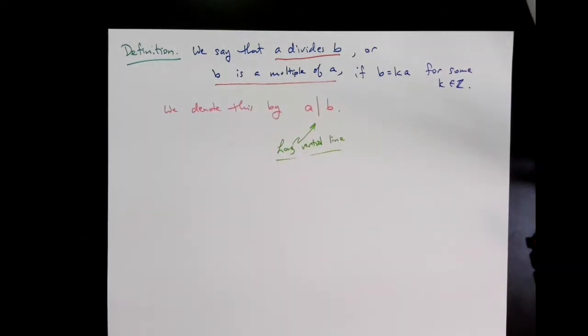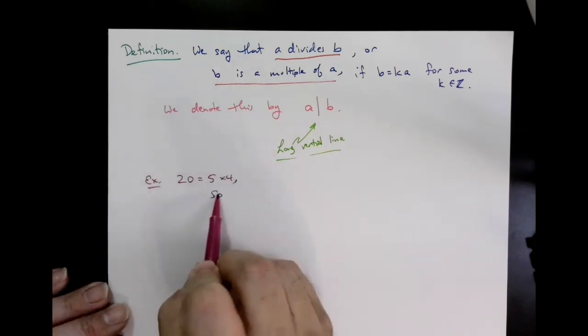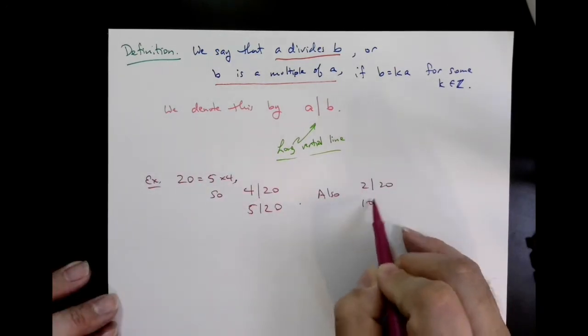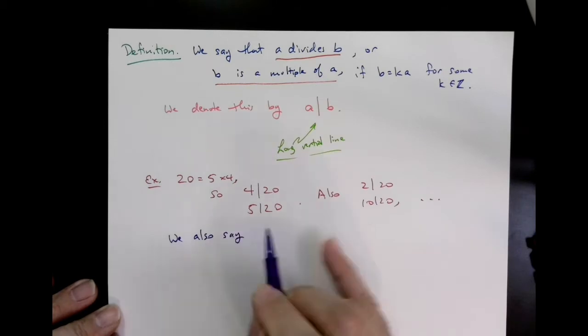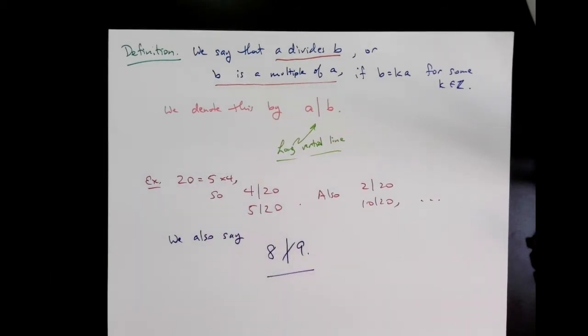For example, we say that 5 divides 20, since 20 equals 4 times 5. We also say that 8 does not divide 9, because 9 is not a multiple of 8.